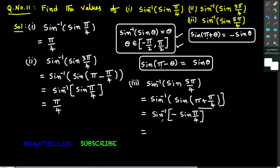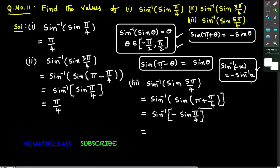That equals sin inverse of (−sin π/4). Sin π/4 = 1/√2. This is of the form sin inverse of (−x). From properties of inverse trigonometric functions, sin inverse of (−x) = −sin inverse x. So this equals −sin inverse of sin(π/4). This is again of the form sin inverse of sin θ, and π/4 lies in [−π/2, π/2], so sin inverse of sin(π/4) = π/4. Therefore, the value of sin inverse of sin 5π/4 is −π/4.